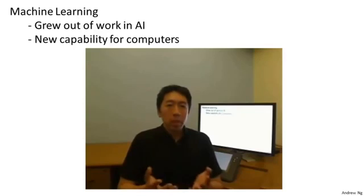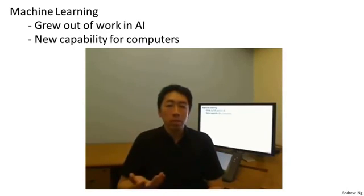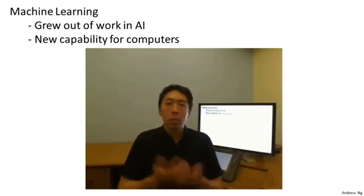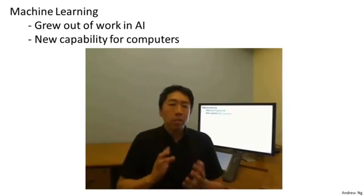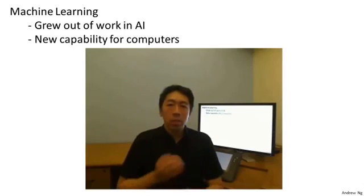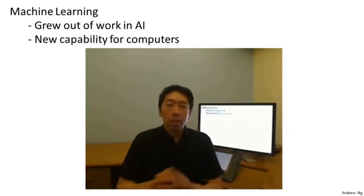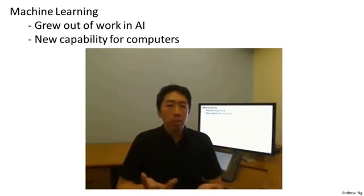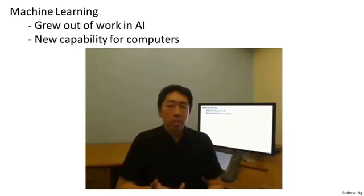But for the most part, we just did not know how to write AI programs to do the more interesting things, such as web search, photo tagging, or email anti-spam. There was a realization that the only way to do these things was to have a machine learn to do it by itself. So machine learning was developed as a new capability for computers, and today it touches many segments of industry and basic science.